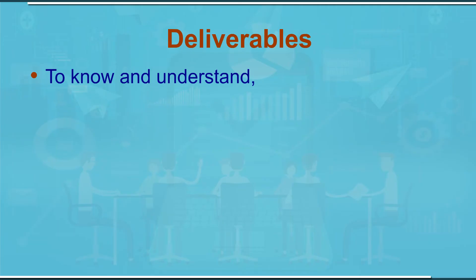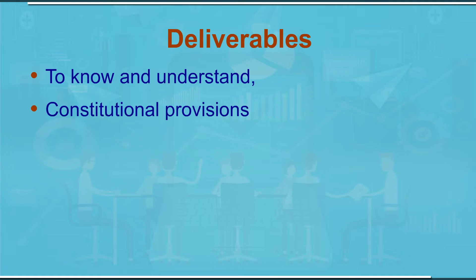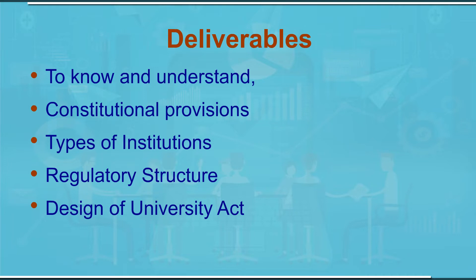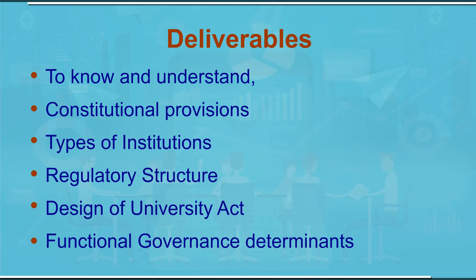With this background, let us decide what will be the deliverables at the end of this forthcoming lecture. I will be focusing on: number one, constitutional provisions regarding higher education; number two, types of institutions in the field of higher education; number three, the regulatory structure of the higher education system in India, in which the university act is the most important document; the design of the university act; and finally, I would lead you all to the functional governance determinants and certain functions in the university system.